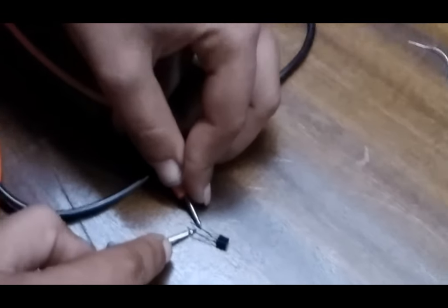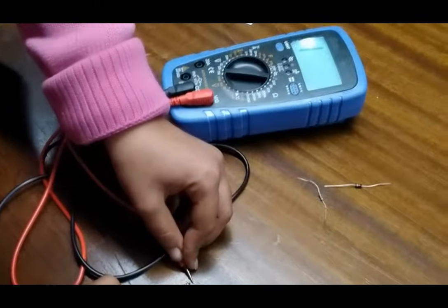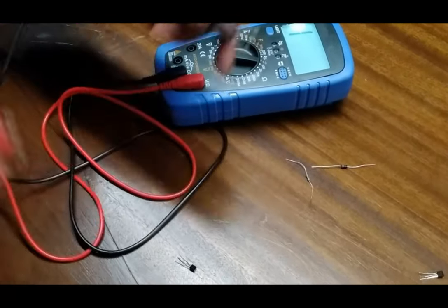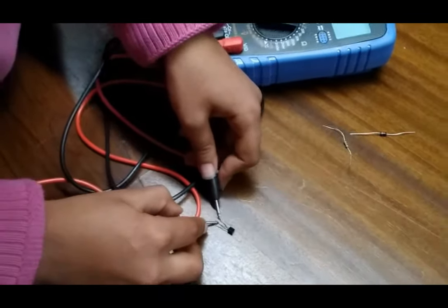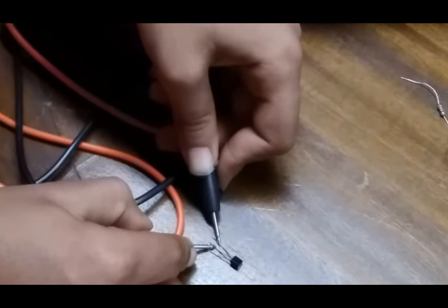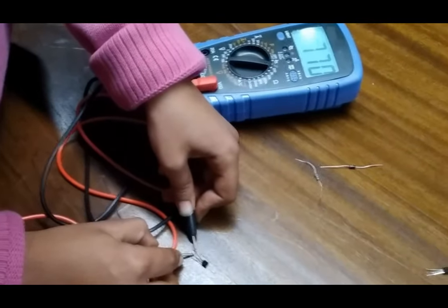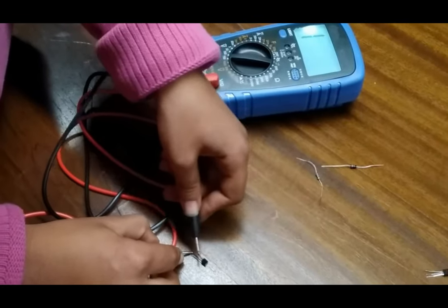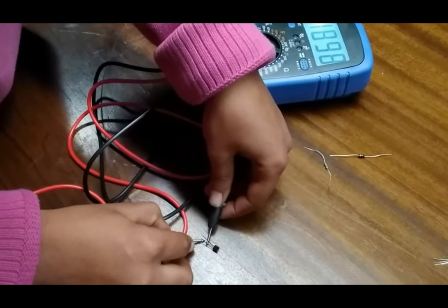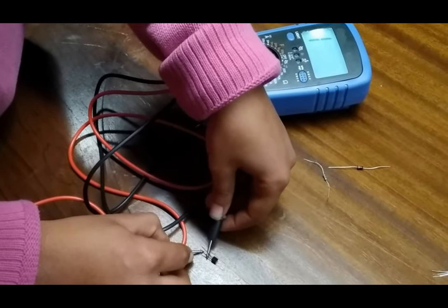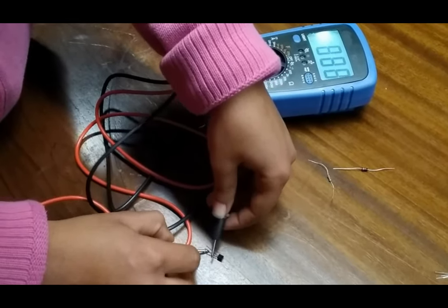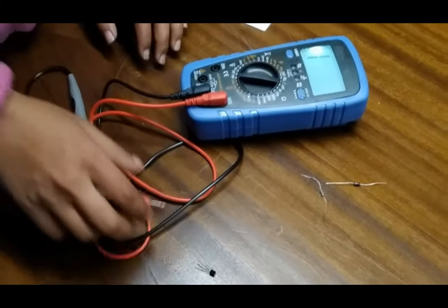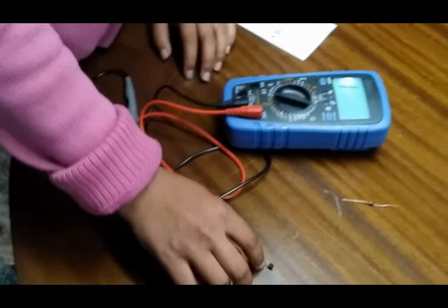Now here no resistance is coming in the display. We interchange our patch cords with positive at the base terminal and negative at the emitter or collector terminal. Now resistance is coming. Again measuring the collector terminal, resistance is coming. In a similar way, we can check all types of transistors and diodes.